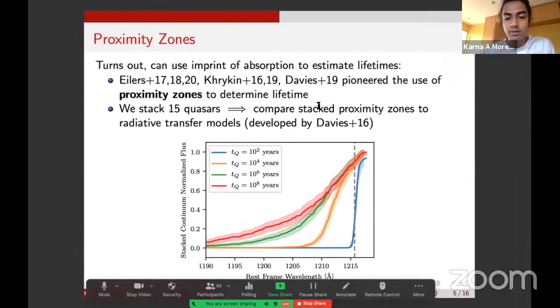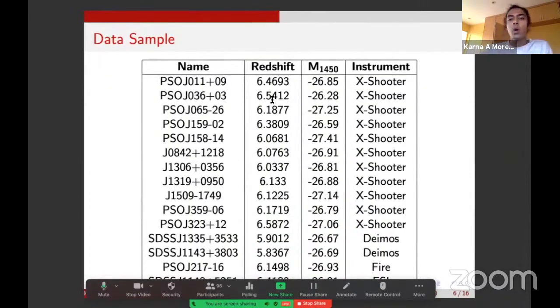This is a very powerful tool because if we can measure the proximity zones of these quasars, we can just directly infer the lifetime. In this work, we stack 15 quasars at redshift 6 and compare their stacked proximity zones to radiative transfer models, which are shown in this plot here. We can compare the stacked proximity zones directly to these models and measure the lifetime of the quasar. We have 15 quasars in our sample between redshift 5.5 and 6.5. We only select quasars with an AB magnitude at 1450 Angstroms between negative 26.5 and negative 27.5. The reason is that the size of the proximity zone not only depends on the age of the quasar or the lifetime of the quasar, but also on the luminosity. To not bias the sample, we make sure that they're all within this range.